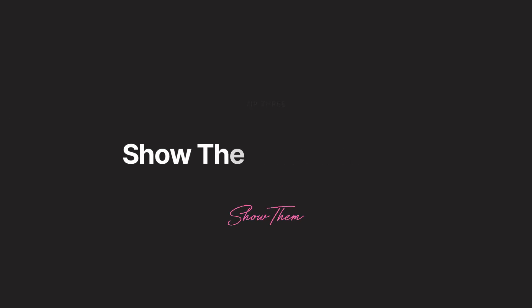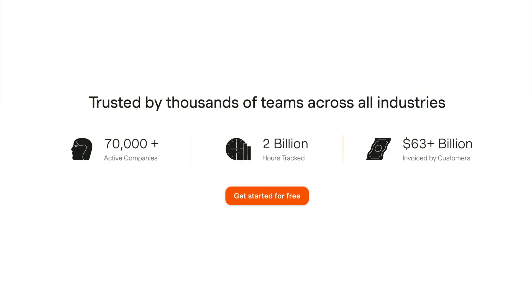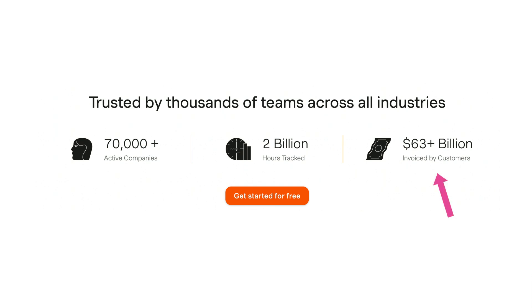Thirdly, show them there is a ton of activity. Building on social proof, metrics and stats are a great way to boost credibility. Here is Harvest again, highlighting that it's trusted by thousands of teams, used by 70,000 companies, has tracked 2 billion hours, and invoiced over 60 billion dollars. These powerful metrics help encourage the landing page visitor to give it a try, showing that the SaaS powers businesses across the globe and is well supported.